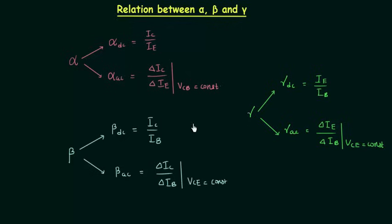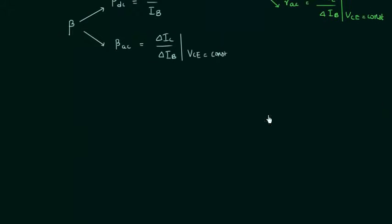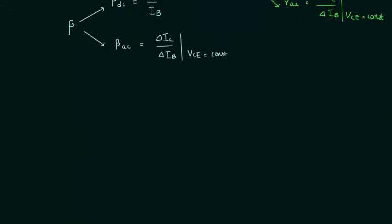So this covers alpha, beta and gamma. Now we have to derive the relation between the three amplification factors. We already know that the emitter current IE is equal to the collector current plus the base current. We can use this to derive the relation between alpha, beta and gamma. I will divide both sides by IB.